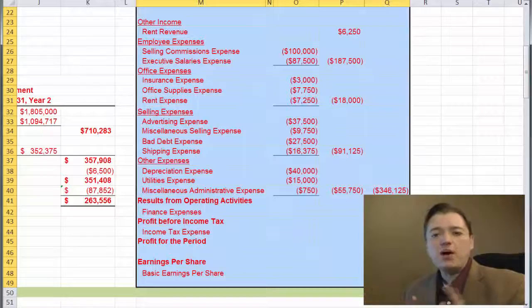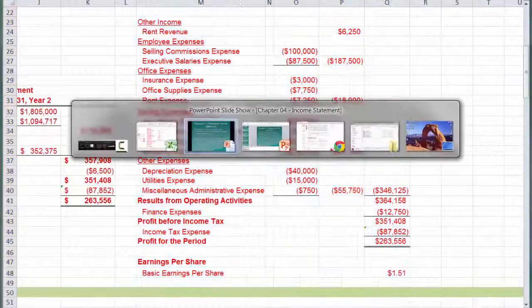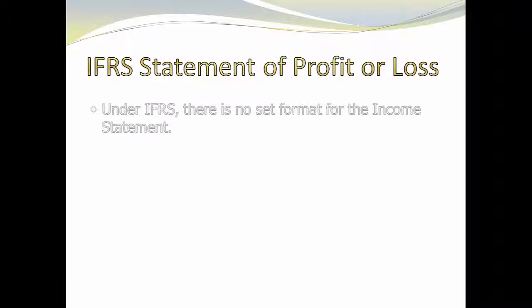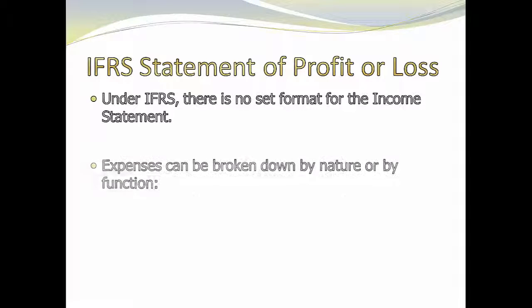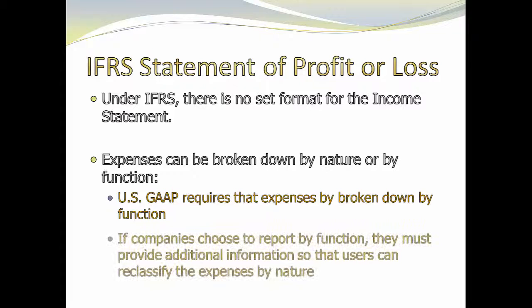Let me highlight a couple of key differences between US GAAP and IFRS. In an IFRS statement, there aren't any set rules — the US GAAP income statement is pretty standard and has a specific way it's supposed to look. Under IFRS, you have a lot of flexibility. The only real rule is that you have to disclose expenses by nature. IFRS allows you to show either nature or function in your income statement, but if you don't show them by nature, you have to put that in a footnote. So if you do an income statement closer to GAAP with operating and administrative expenses, you'd need a footnote showing how expenses would look categorized by nature instead of function.